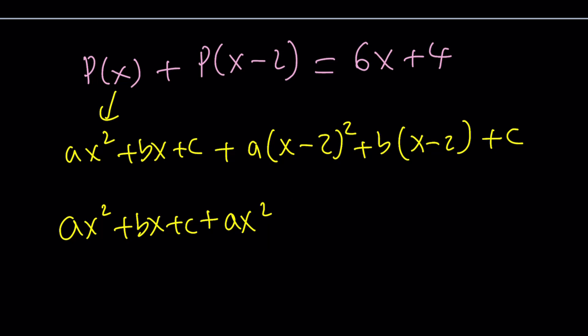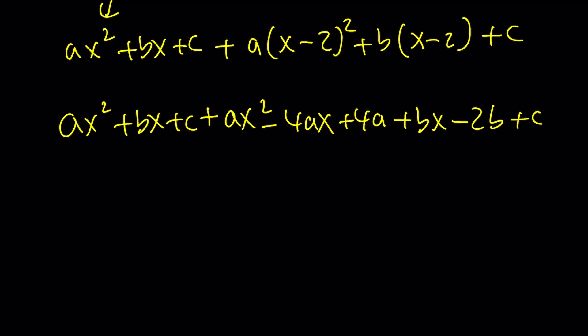I say minus, but I write plus. Minus 4ax. And then plus 4 is going to give me 4a + bx - 2b + c. I'm not going to say it this time. ax² + ax² is going to be 2ax². bx + bx is going to be 2bx. And then again, I'm not going to say it. And then 2b and then minus 4a, that's going to be the coefficient of x.